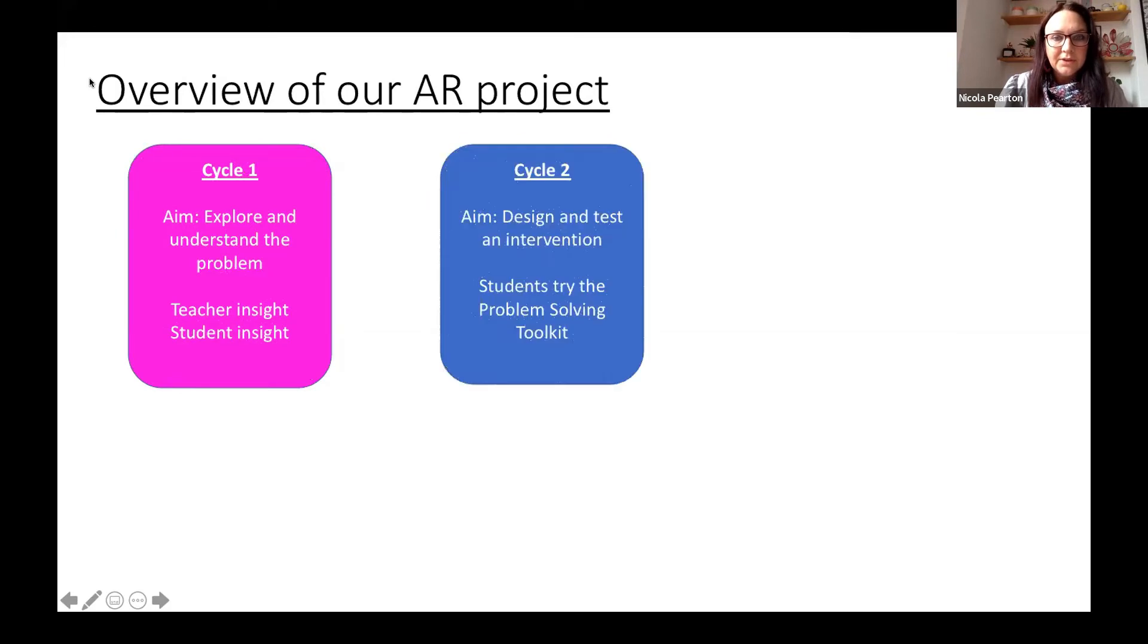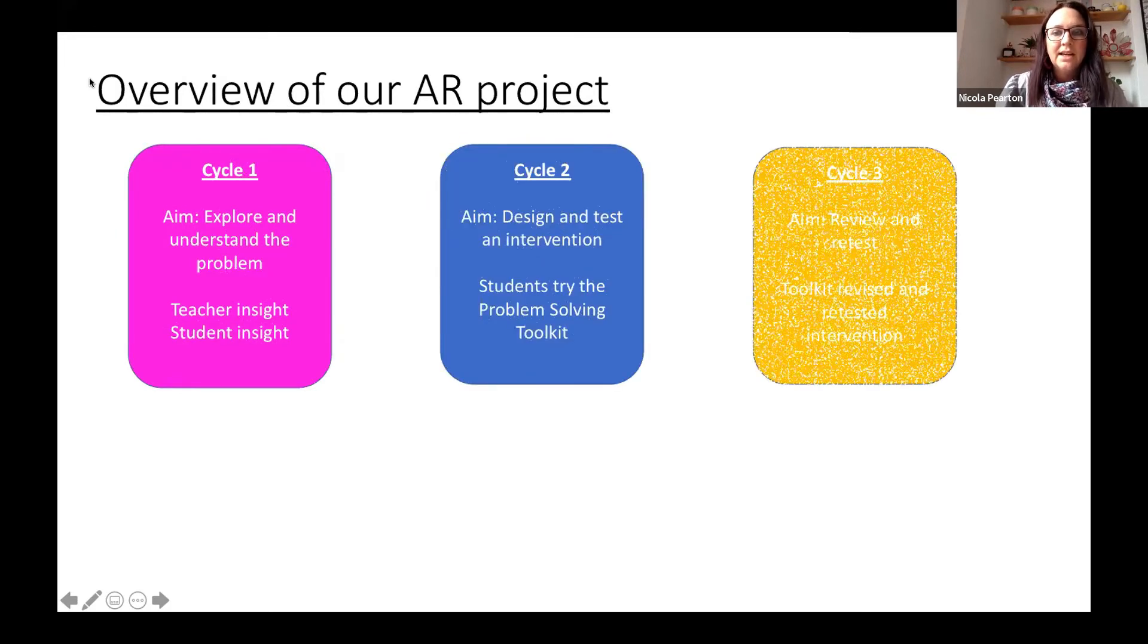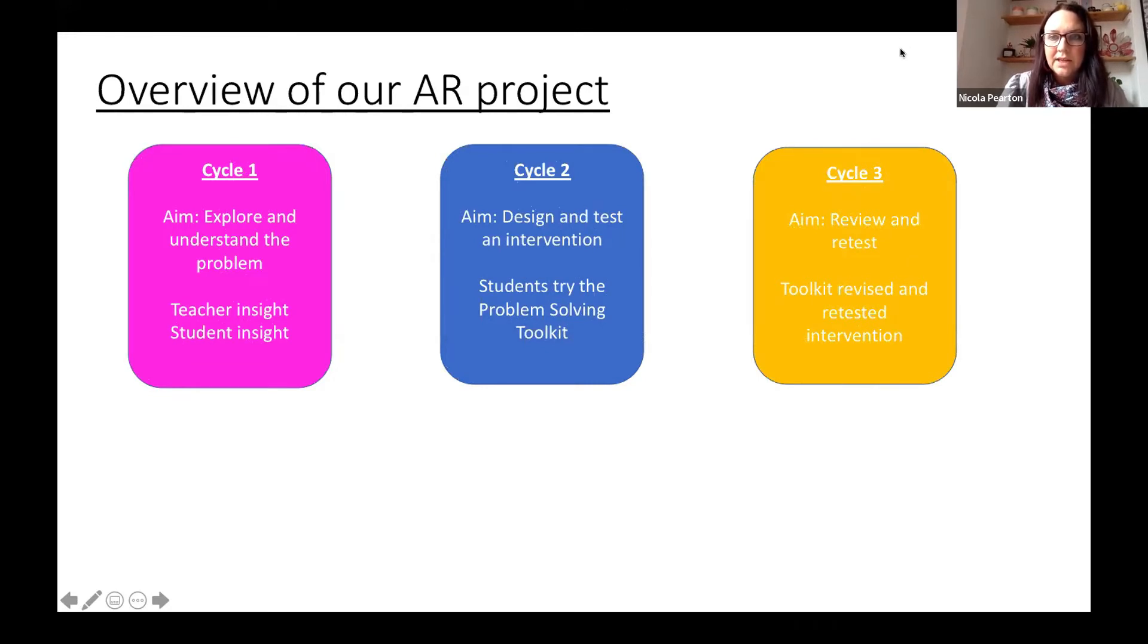A quick overview: In Cycle 1, we aimed to explore and understand the problem. In Cycle 2, we designed an intervention and tested it. In Cycle 3, we reviewed the intervention, the toolkit that we made, and then we retested it.